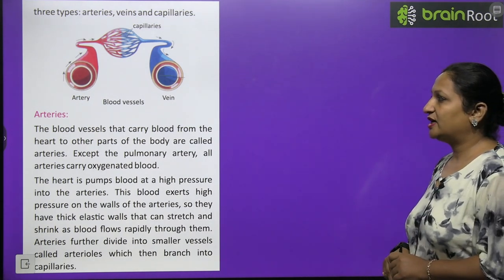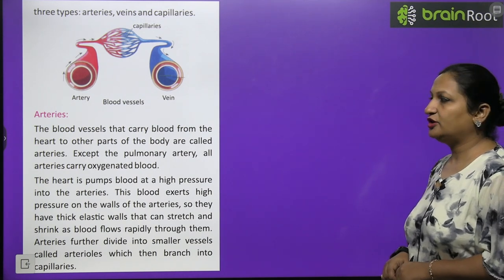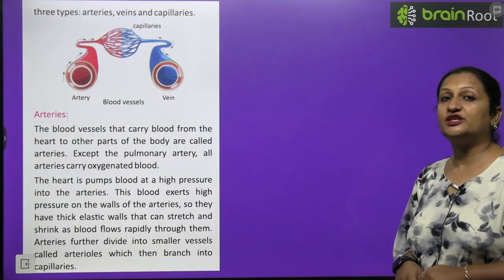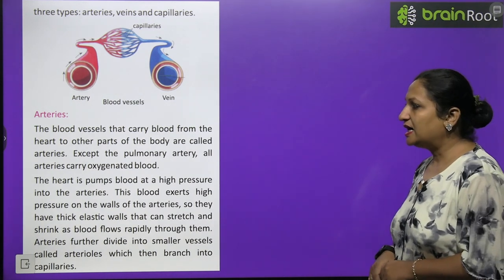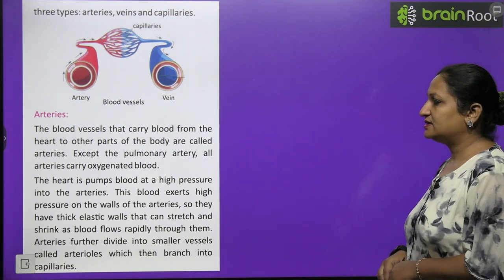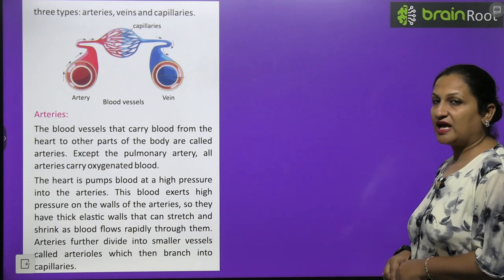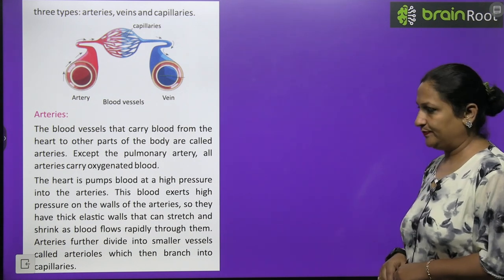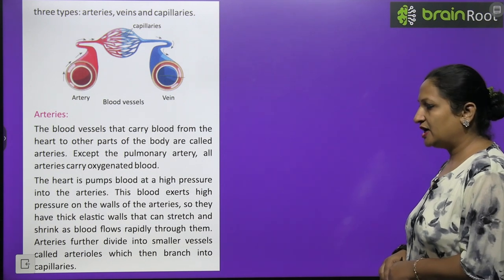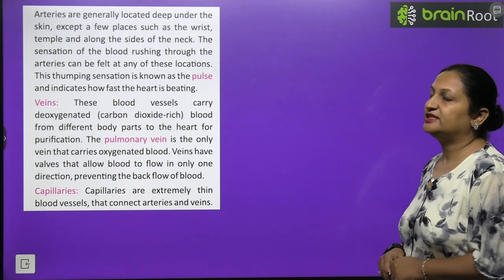The blood vessels that carry blood from the heart to other parts of the body are called arteries. Except the pulmonary artery, all arteries carry oxygenated blood — blood rich in oxygen. The heart pumps blood at high pressure into arteries, so they have thick elastic walls that can stretch and shrink as blood flows rapidly through them. Arteries further divide into smaller vessels called arterioles, which then branch into capillaries.